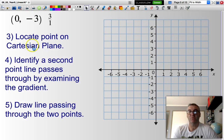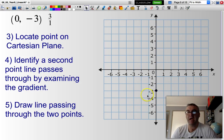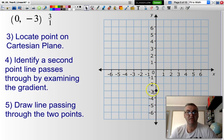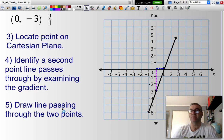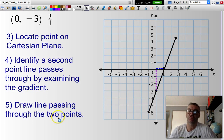So I locate my starting point on the Cartesian plane. Then I need to identify a second point. My gradient is 3 over 1, so that means I go up 3, then I go across 1 to get my second point. Once I have that second point, I can draw a straight line using my ruler straight through those two points I have identified.